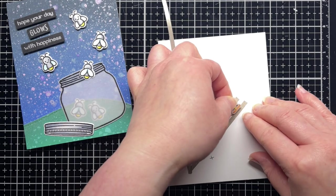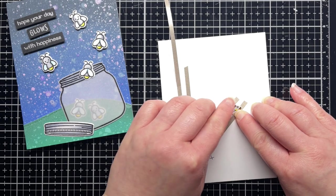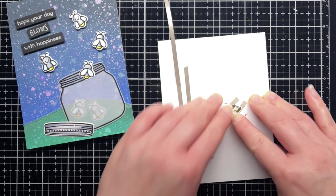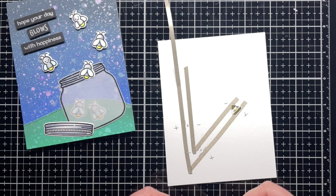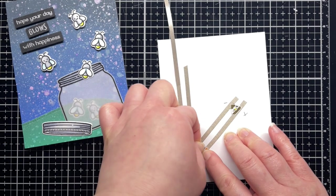Next I place my LED stickers over the tape, centering them on the holes I traced earlier. I make sure that the negative point of the sticker covers the negative side of my circuit, and the positive side of the sticker covers the positive side of my circuit.